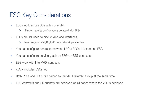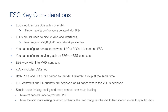From a deployment and hardware configuration perspective, ESG contracts and BD subnets are deployed on all nodes where the VRF is deployed. Route leaking is extremely simple — there's no need for subnets under the provided EPG anymore, giving you more freedom in EPG configuration. The configuration is cleaner, but that also means there's no automatic route leaking based on contracts.